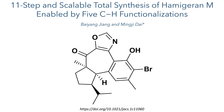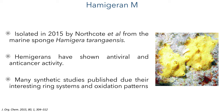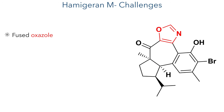This work was published in JACS by Bai Yang Yang and Ming-Gi Dao. Hemigaran M was first isolated in 2015 by Northcote et al. from the marine sponge Hemigera tarangaensis. Other members of this family have shown potent antiviral and anti-cancer activity, and the biological activities of Hemigaran M have yet to be fully studied.